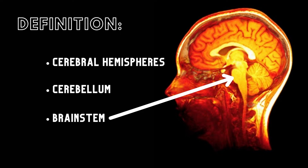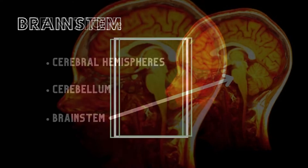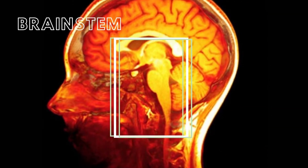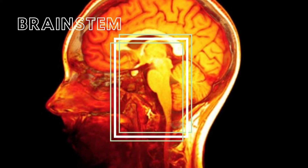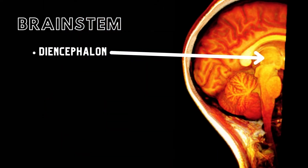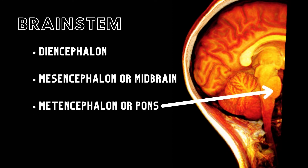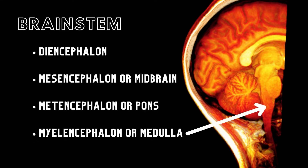In this Brain Builder, we are going to focus on the brainstem and look at each of the four divisions of the brainstem, which are the diencephalon, the mesencephalon (also called the midbrain), the metencephalon (also known as the pons), and the myelencephalon (also called the medulla).